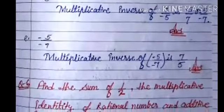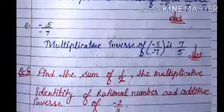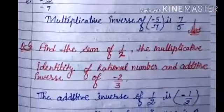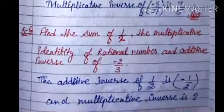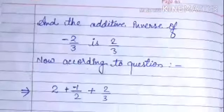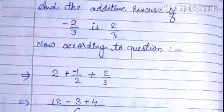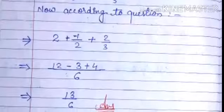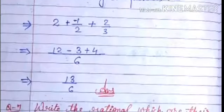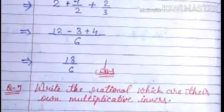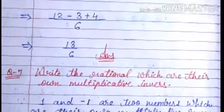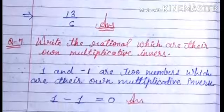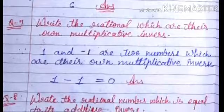The next question: find the sum of one upon two, the multiplicative identity of rational numbers, and the additive inverse of minus two upon three. The additive inverse of one upon two is minus one upon two, and the multiplicative inverse is two. Adding all three: two plus minus one upon two plus two upon three. Taking LCM of two and three as six, we get (twelve minus three plus four) upon six, which gives thirteen upon six. Next question: write the rational numbers which are their own multiplicative inverse — those are one and minus one, since one times minus one equals zero... actually one and minus one are each their own multiplicative inverse.